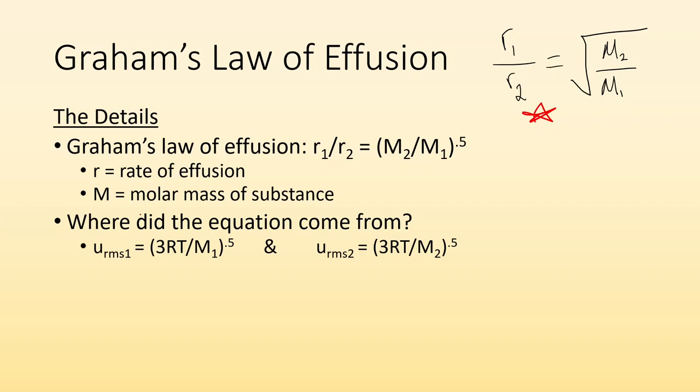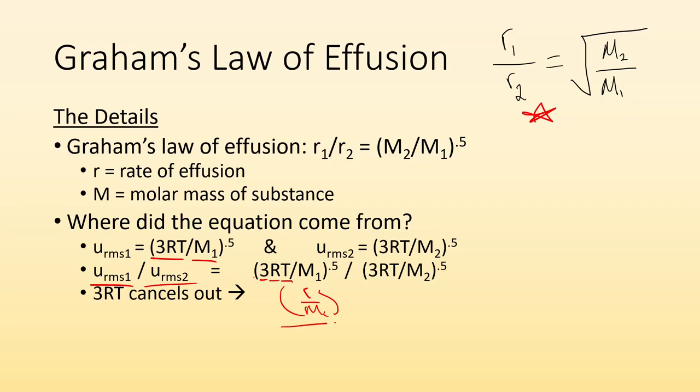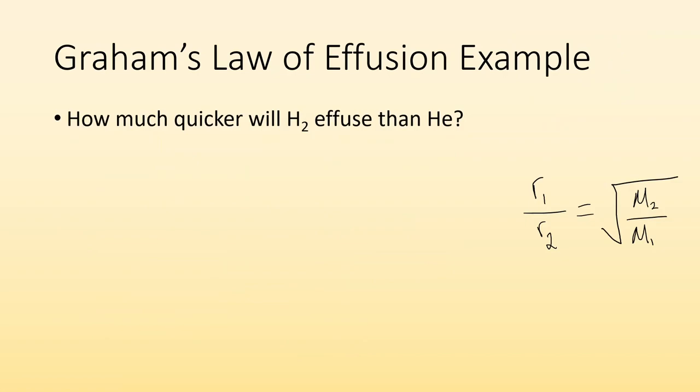Where did it come from? So we know the root mean square speed equation is the square root of 3RT over the molar mass. And then the same thing for the second particle. Now if we divide the root mean square speed of 1 divided by the root mean square speed of 2 we end up with this going on over here and we know that 3R and T are all constants. So they're going to cancel out. And then we have the square root of 1 over M1 divided by the square root of 1 over M2. And then we don't like fractions on fractions so we do a keep change flip and we end up with this. The rate of 1 divided by rate of 2 is going to equal the square root of M2 divided by M1.